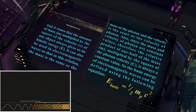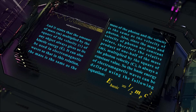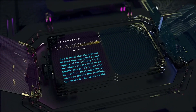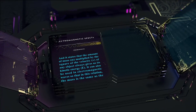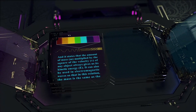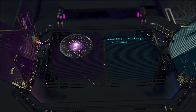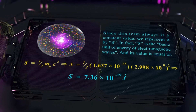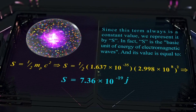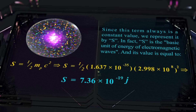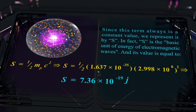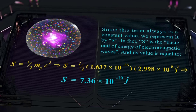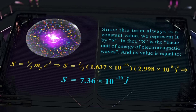So, the basic energy of electromagnetic waves can be defined using the following equation. Since this term is always a constant value, we represent it by S. In fact, S is the basic unit of energy of electromagnetic waves, and its value is equal to a specific constant.